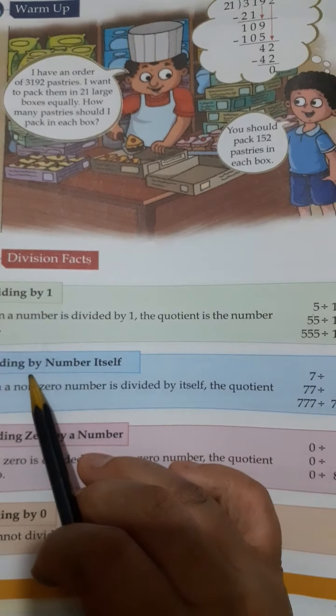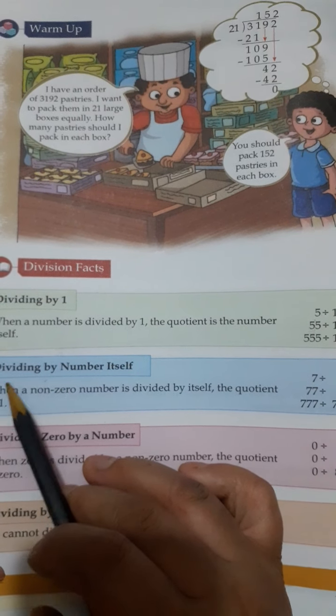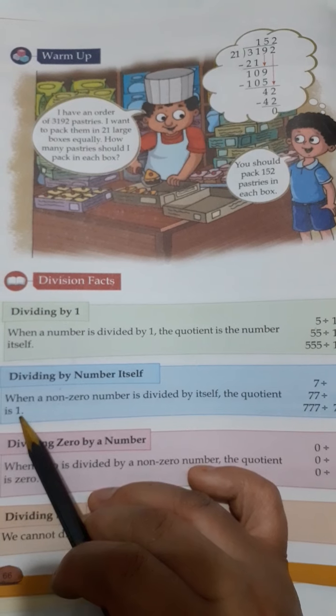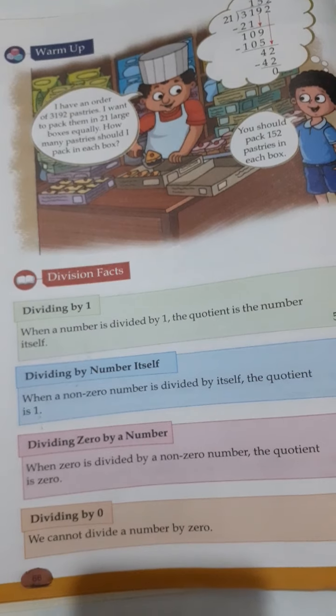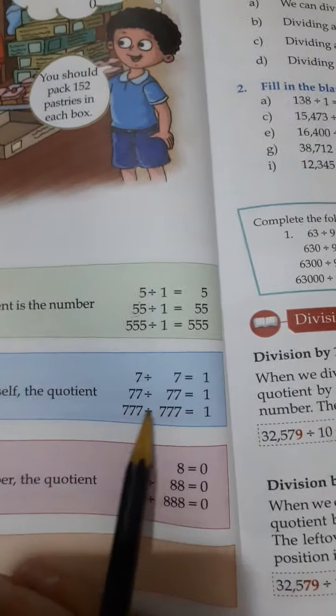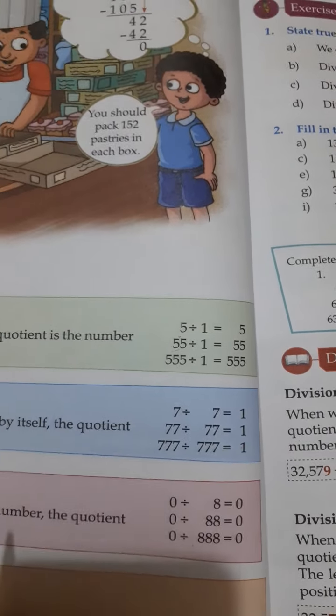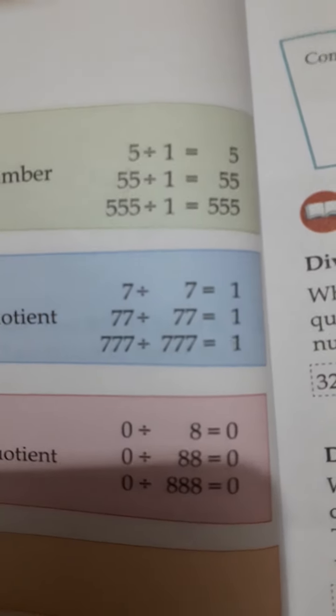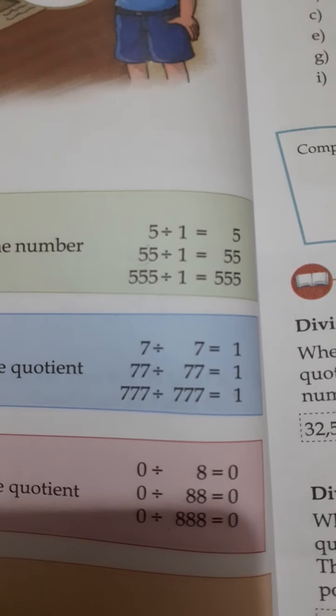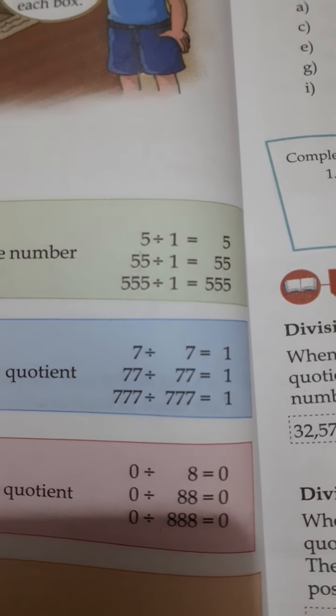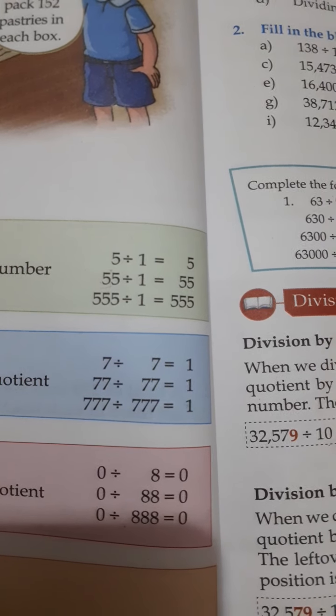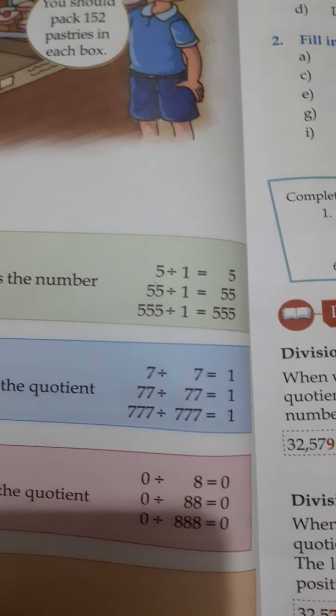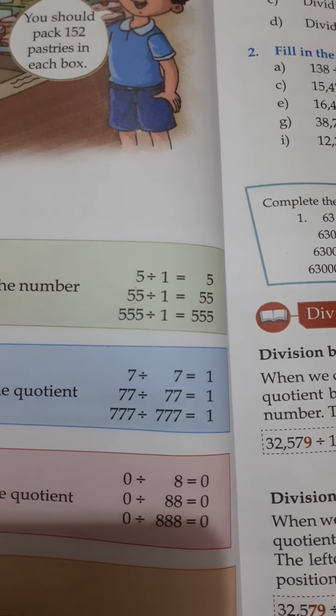The second is dividing by the number itself. When a non-zero number is divided by itself, the quotient is 1. So here you can see, there is no 0 in this number. We are taking 7 divided by 7, that is equals to 1. 77 divided by 77, that is equals to 1. This rule is only followed in those numbers which are not having 0. The result should be changed if the number is having the 0.